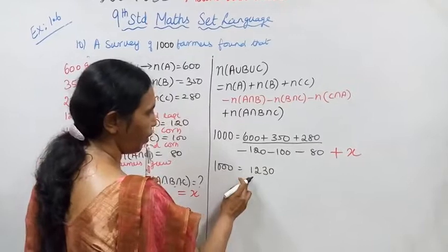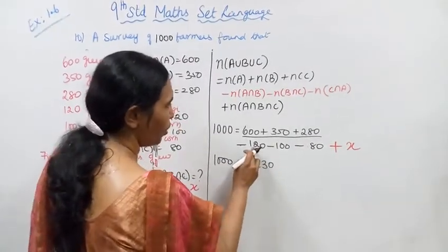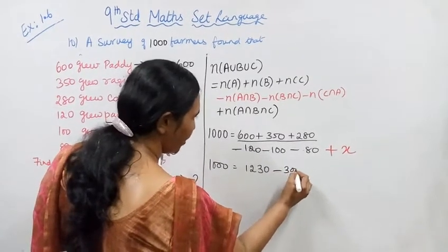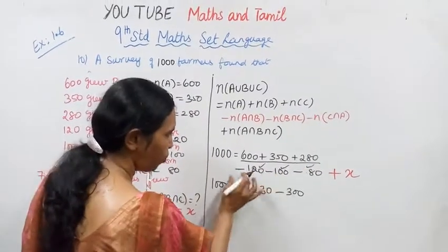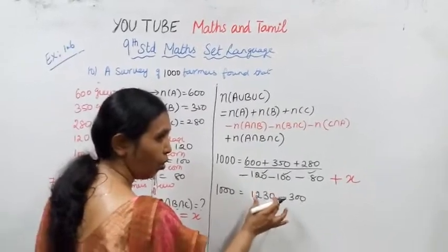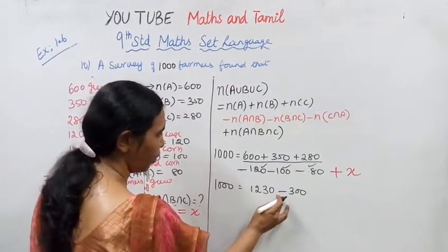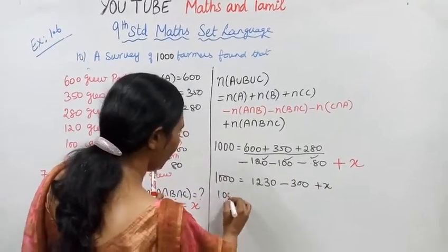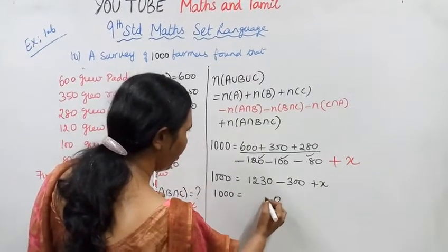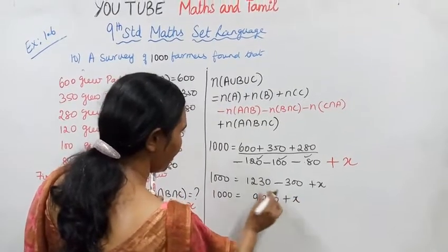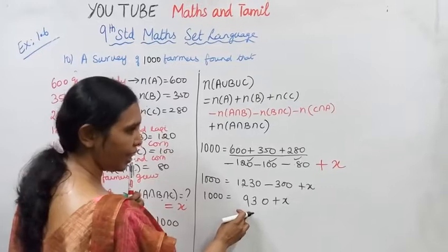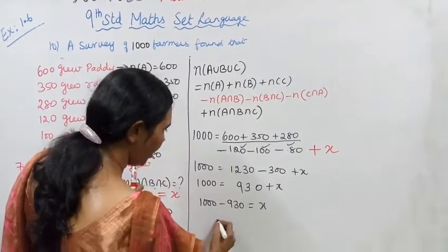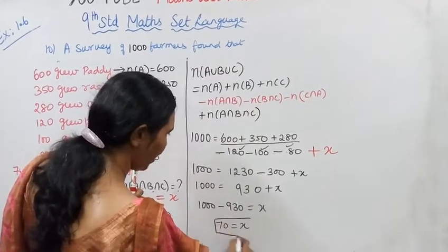So adding: 600 + 350 + 280 = 1230. Subtracting: 120 + 100 + 80 = 300. So 1000 = 1230 − 300 + x, which gives 1000 = 930 + x. Therefore x = 1000 − 930 = 70.